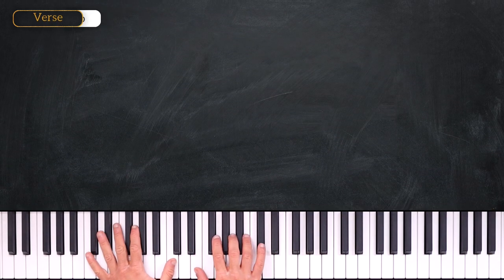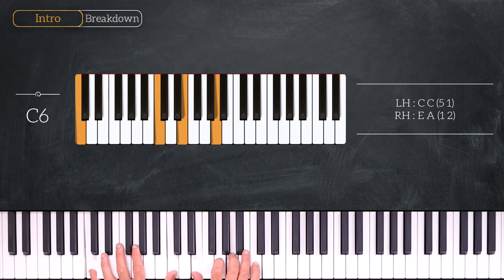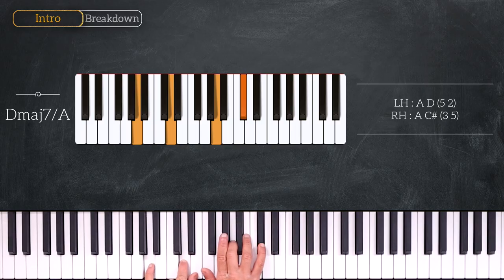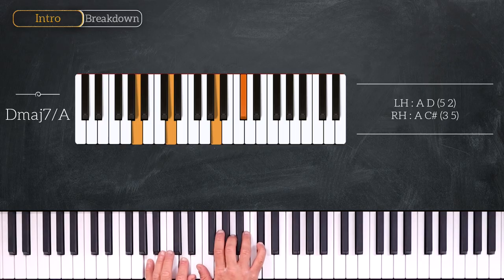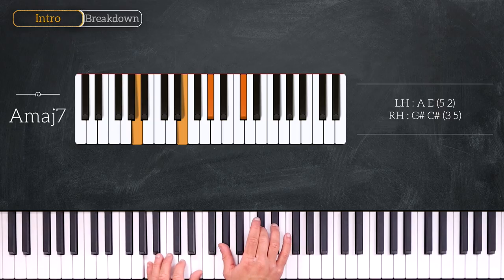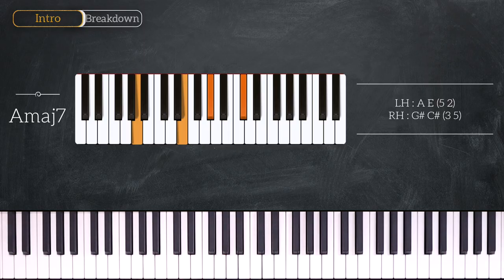Here are the chords. We start on C6, so we have octave C on the left and E A on the right. Then we'll play a D major 7 over A, so we have A D on the left and A C sharp on the right. And the last chord will be this A major 7, so we have A E on the left hand and G sharp C sharp on the right. And that's all, there are only 3 chords.